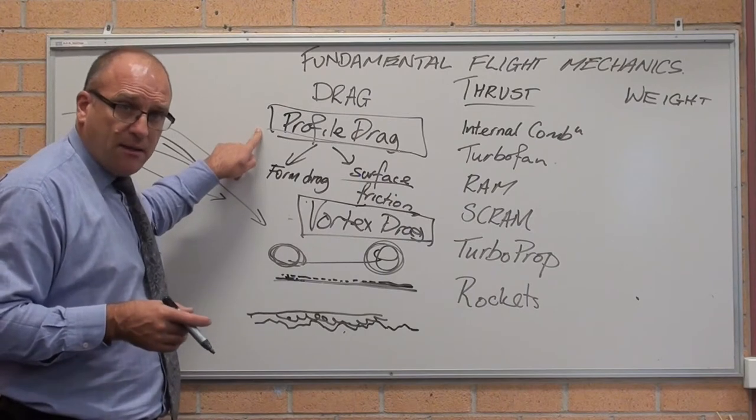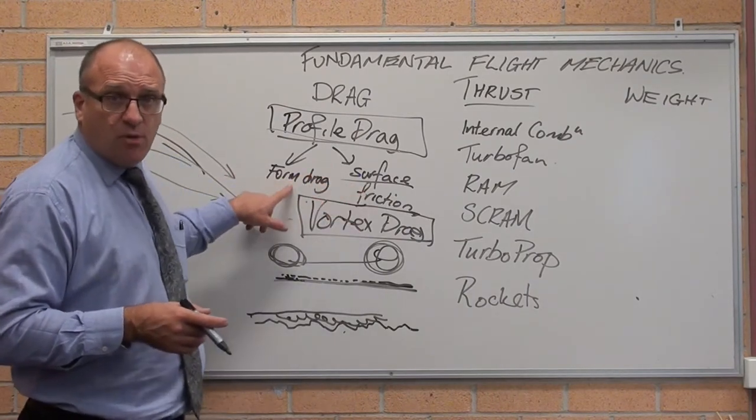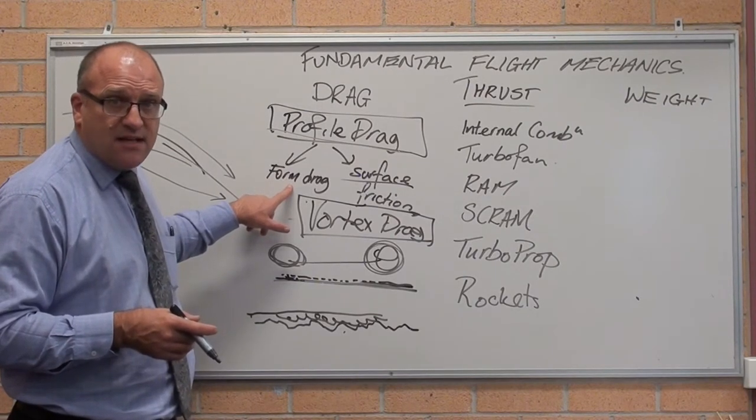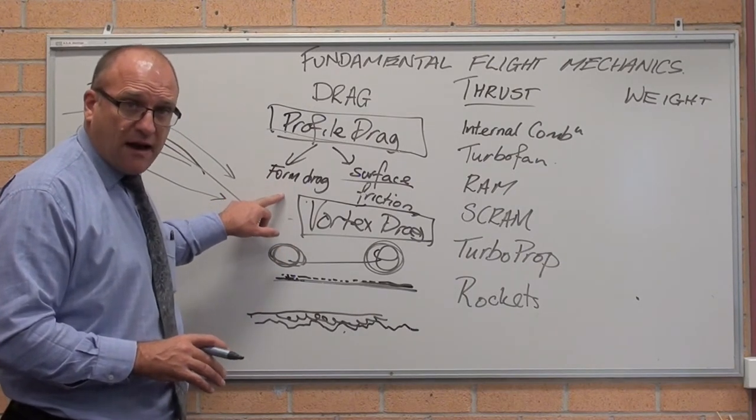Profile drag, form drag, surface friction. Form drag is just basically the size, the shape of the aircraft, how much it interferes with airflow just to make it move through. Faster you travel, the greater the drag.